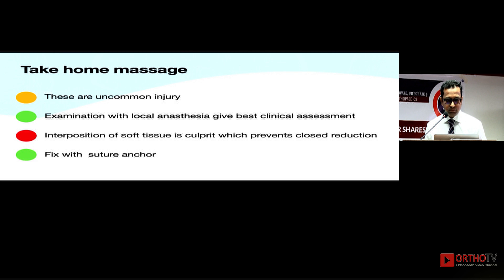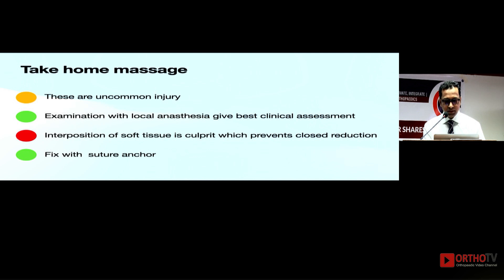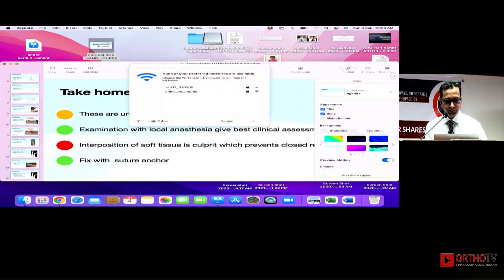To summarize: these are uncommon injuries. Give a local finger block and assess clinically. Treatment is based on your examination. Whenever close reduction is stable, start early range of motion with taping. If not reducible, do a local ultrasound — the best non-invasive tool — then go through the mid-axial approach and fix with micro-anchors. You can have good results.